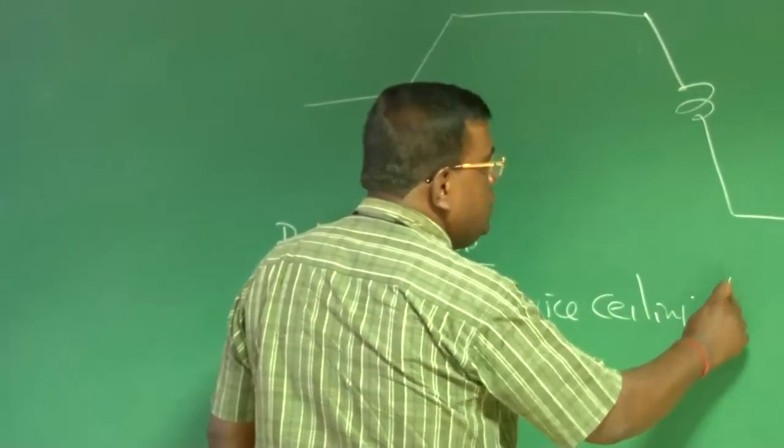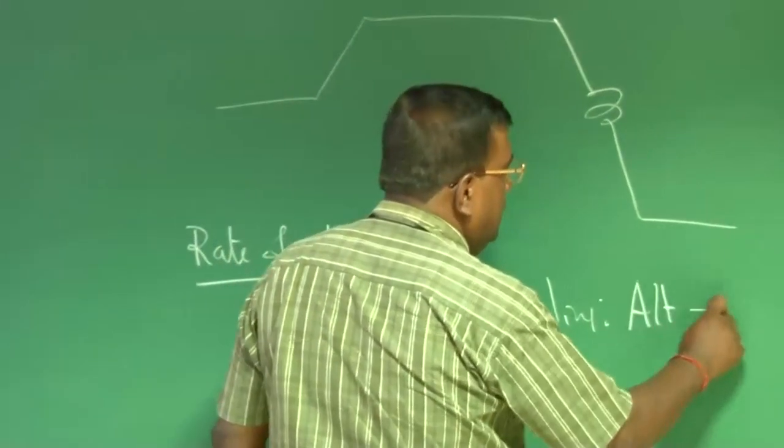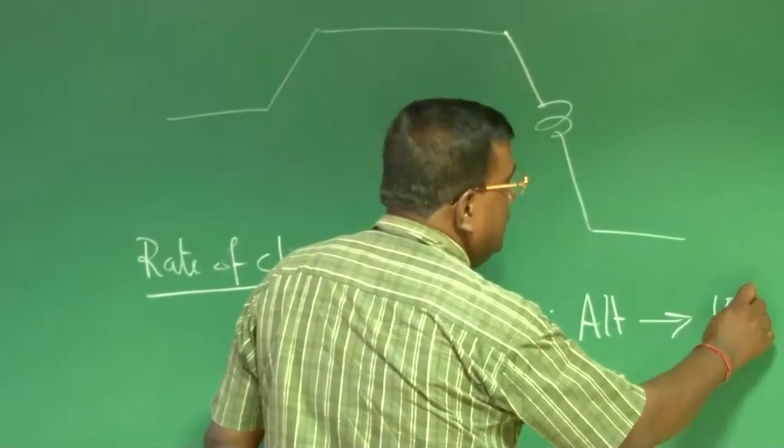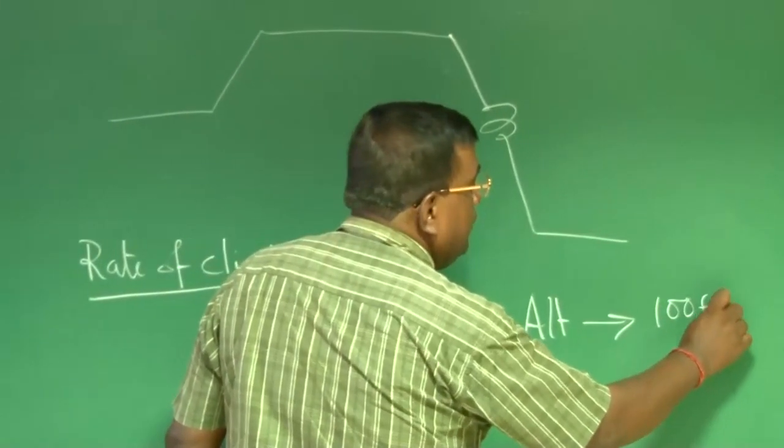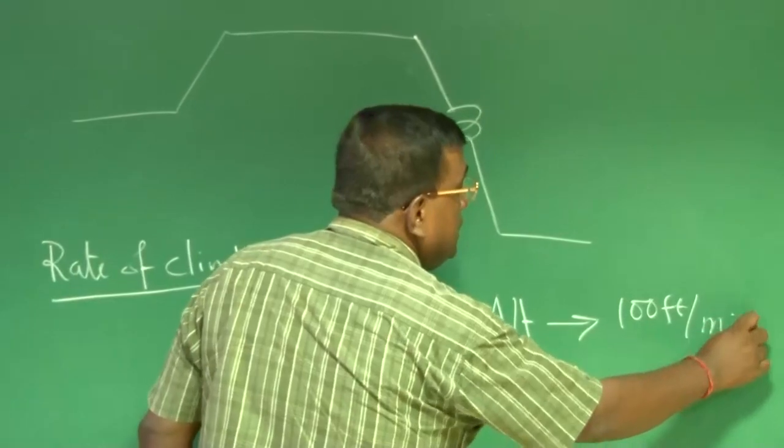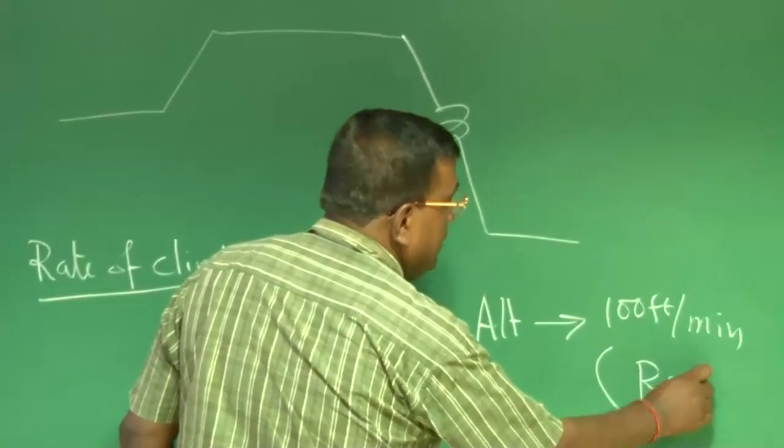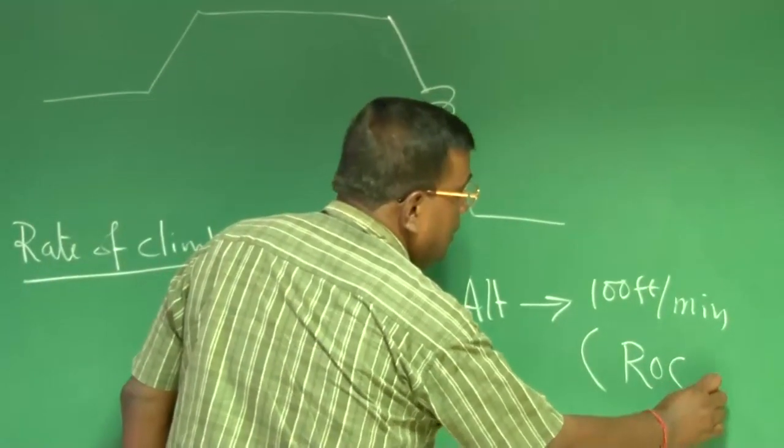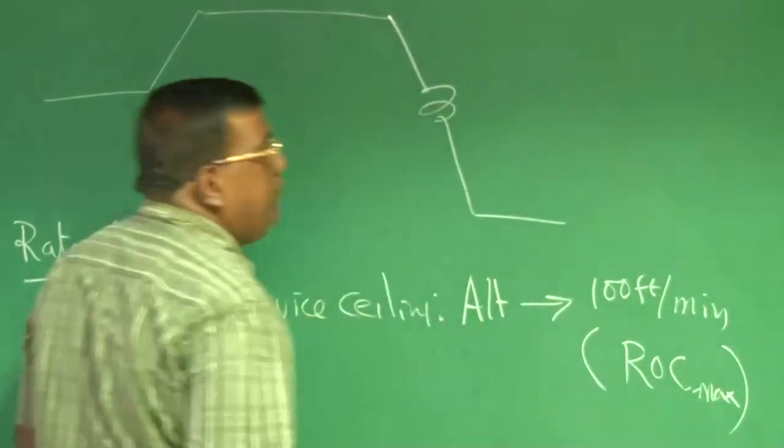We say it is that altitude, at which the rate of climb maximum, is ROC maximum, is 100 feet per minute.